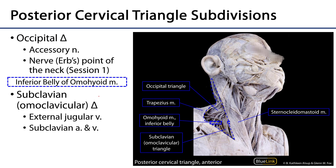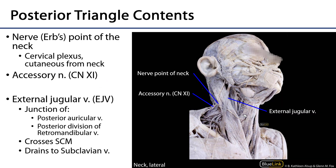The posterior triangle is divided by the inferior belly of the omohyoid muscle. Omohyoid has two bellies — an inferior and a superior — with a tendinous intersection and a small fascial sling. It is one of the infrahyoid muscles capable of depressing the hyoid bone. This inferior belly divides the posterior triangle into the occipital triangle and the subclavian — or omoclavicular — triangle.